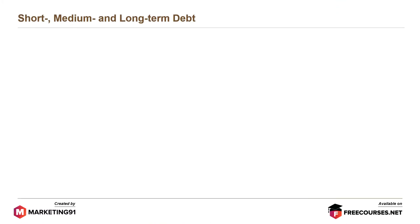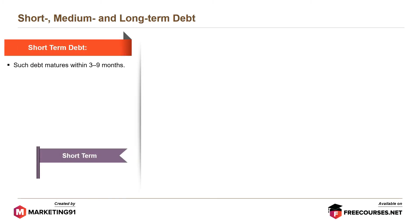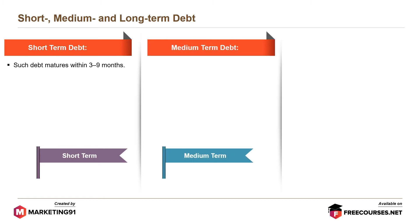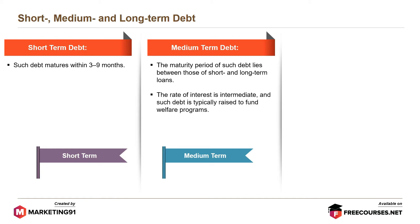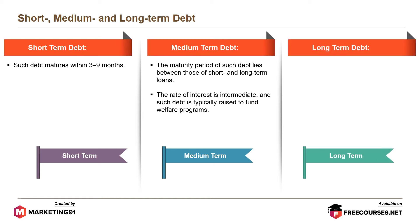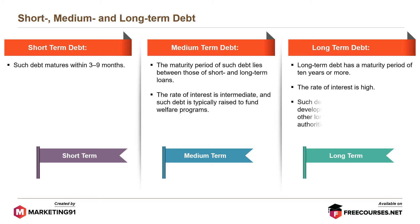Short-term debt matures within 3 to 9 months. Medium-term debt has a maturity period between those of short and long-term loans; the rate of interest is intermediate and such debt is typically raised to fund welfare programs. Long-term debt has a maturity period of 10 years or more; the rate of interest is high, and such debt is used to fund developmental programs and meet other long-term needs of public authorities.